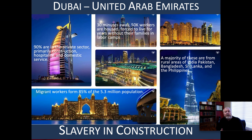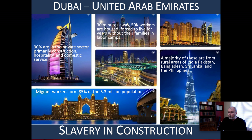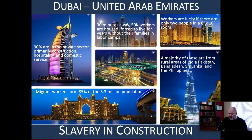Just 30 minutes away from all that splendor are approximately 50,000 workers who are forced to live for years, oftentimes with their passports seized, without their families in labor camps. If you've visited Dubai, you may have seen those workers working in 100 degrees Fahrenheit — 38 degrees Celsius — or higher temperatures, often in the heat of the day. Workers are lucky if there are only two people in an 8-foot by 10-foot room. For these people, many if not most of them, their lives consist of working, eating, sleeping, and doing it all over again — day after day after month after year.